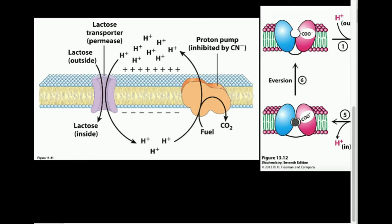All right, so in this video we're going to go over a specific type of secondary active transport, and this is going to be the lactose transporter. Sometimes the name of this enzyme is given lactose permease.